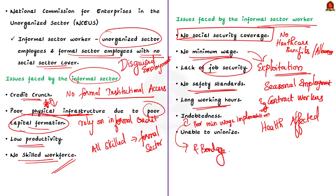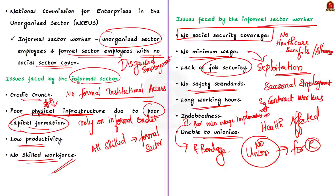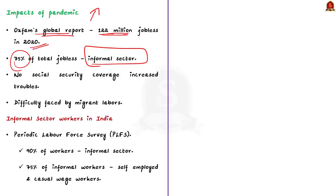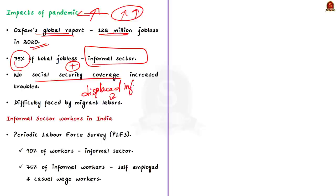The workers in the informal sector are not allowed to organize themselves — that is, they cannot form unions and fight for their rights. With the pandemic-induced lockdowns, the issues faced by the informal sector actually increased. According to Oxfam's latest global report, out of the total 122 million who lost their jobs in 2020, 75% were lost in the informal sector. This coupled with the fact that informal sector workers have no social security coverage, the difficulties faced by informal sector workers increased during the pandemic. The pain faced by displaced informal workers, like the migrant workers trying to get back to their homes, is still fresh in our memories.